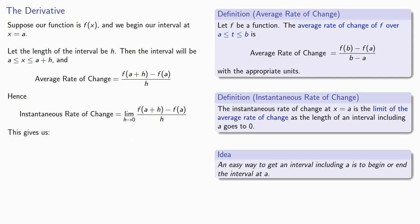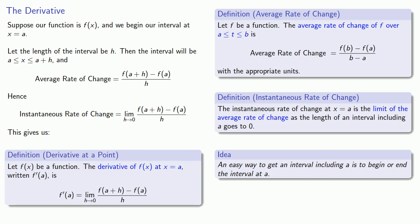And this particular limit is so important that we give it a very specific name. We call it the derivative at a point. And like every definition in mathematics, it is vitally important that you understand and remember this basic definition. So here it is: let f(x) be a function, the derivative of f(x) at x equals a, written f prime of a, is going to be defined as the limit as h goes to 0 of the difference quotient.